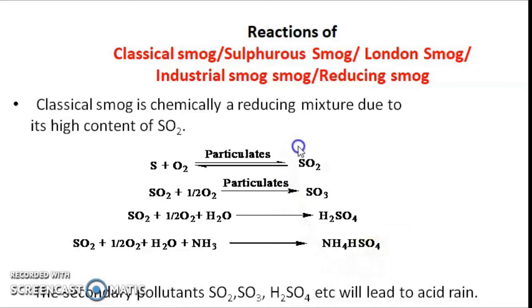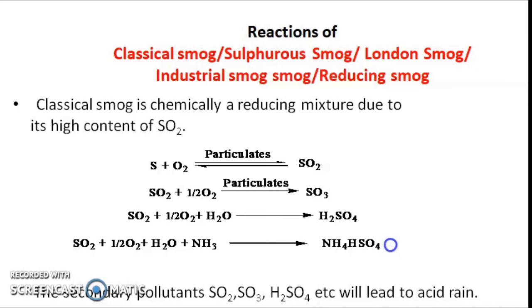These secondary pollutants may also lead to acid rain, and acid rain will lead to water pollution. So one type of pollution is leading to another type of pollution, and the overall effect on the environment is increasing.